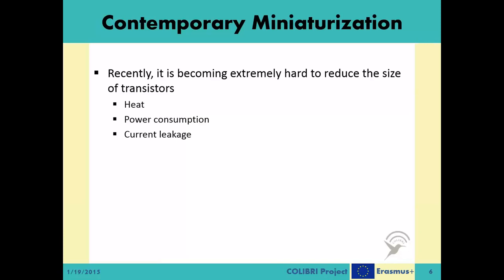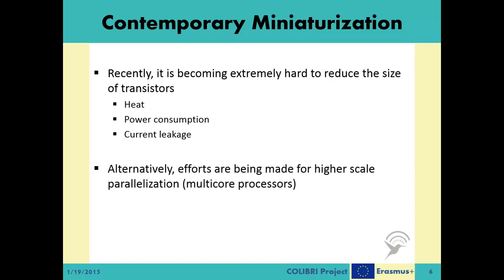Unlike the 90s and 2000s, recently it has become much harder to reduce the size of a transistor and keep it economically feasible. The main issues preventing progress in building smaller transistors are mainly threefold: the inability to dissipate heat from transistors efficiently, increased power consumption, and current leakage. It is argued that we may have reached the limit of Moore's Law. In the wake of this limitation, research for higher processing power has divided into two main groups: finding alternative materials for smaller, cheaper microprocessors, and utilizing parallelization to increase processing power.